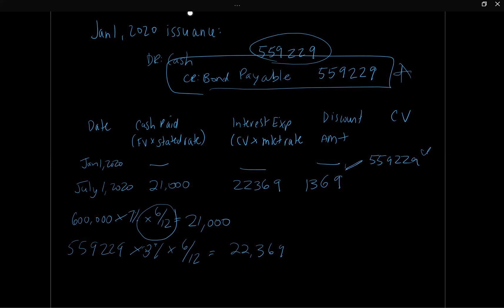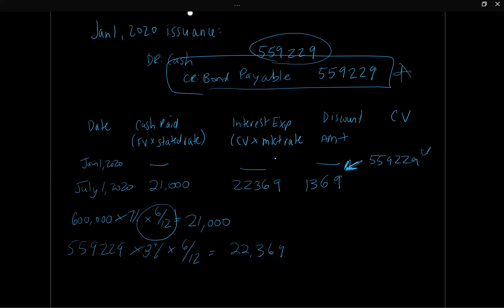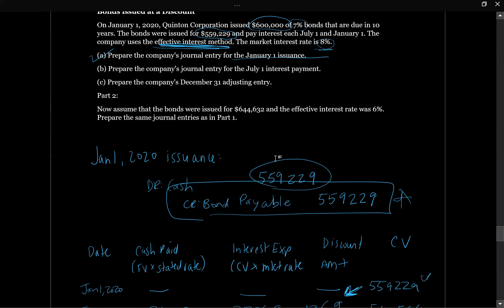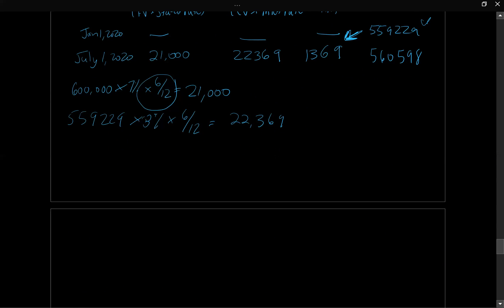To get the new carrying value, we either add or subtract the discount or premium amortization. Right now the carrying value is below face value — $559,229 versus $600,000 face value — so we need to increase the liability over time toward $600,000. We add the $1,369 discount amortization to the carrying value, giving a new carrying value of $560,598.